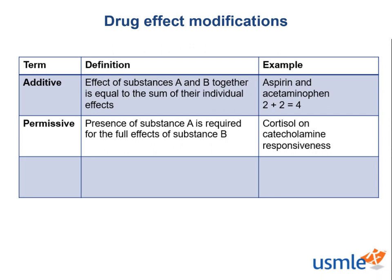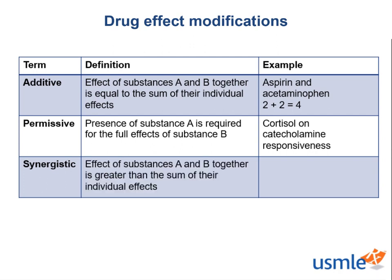Next, we have the term synergistic, which is defined as the effect of substances A and B together is greater than the sum of their individual effects — like the mathematical equation where 2 plus 2 is greater than 4 — or with the example of clopidogrel with aspirin. Aspirin inhibits cyclooxygenase, and clopidogrel blocks the ADP-P2Y12 receptor to prevent platelet aggregation. But they are more valuable together than they are as individuals, and thus they are synergistic.